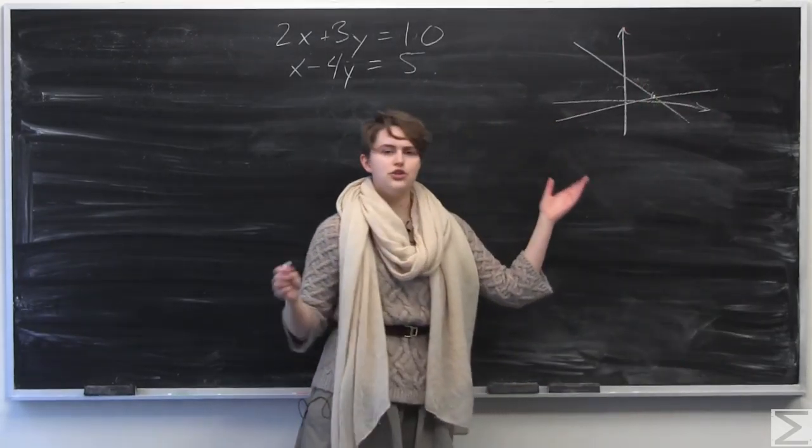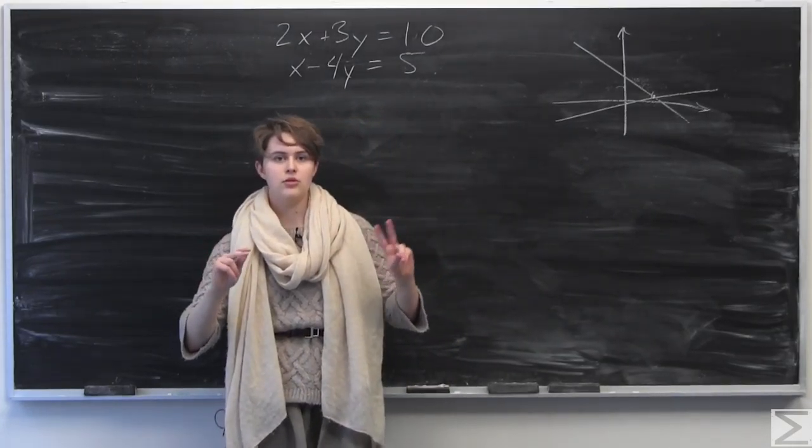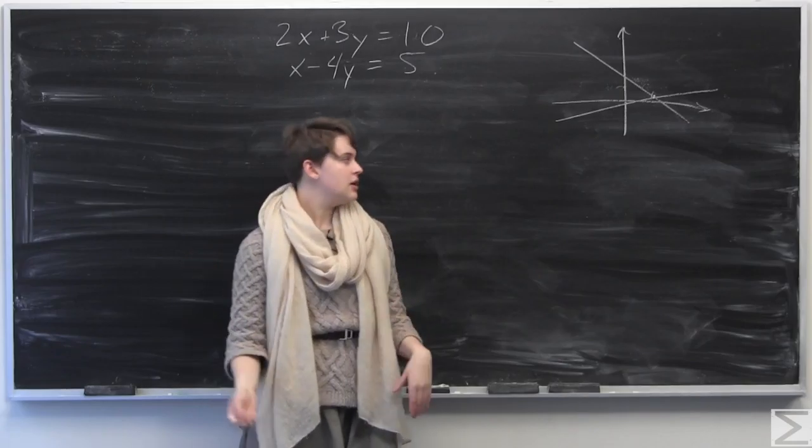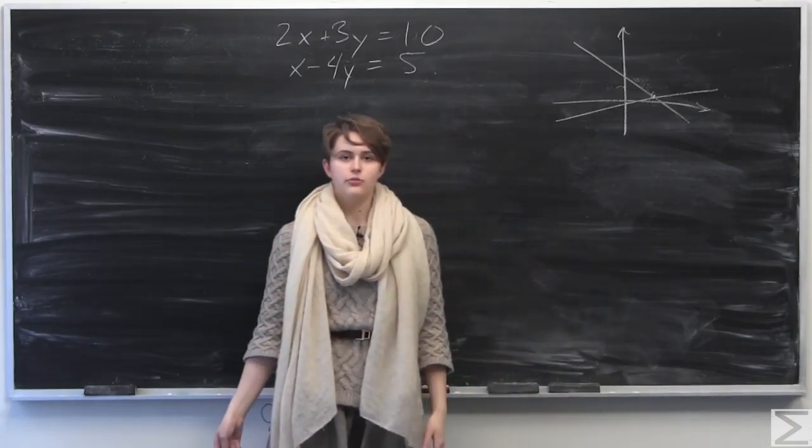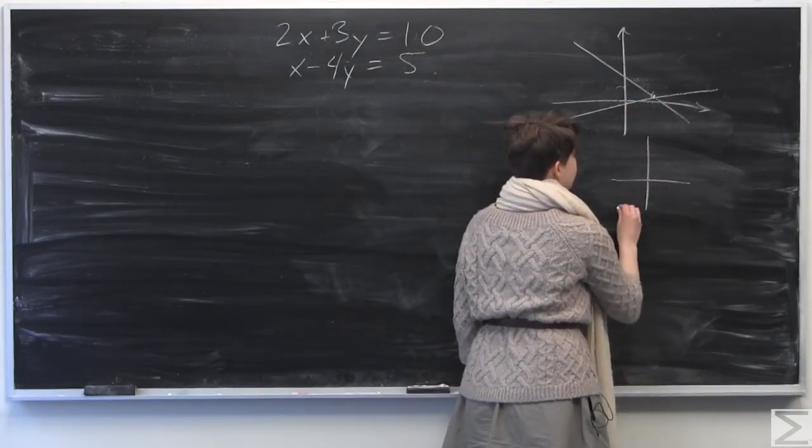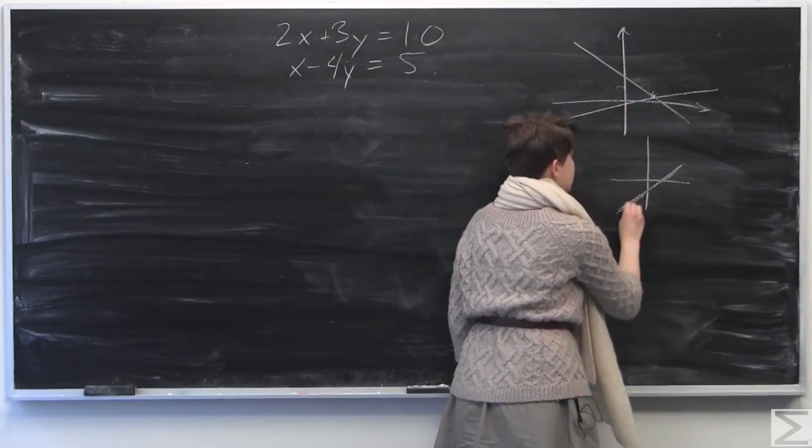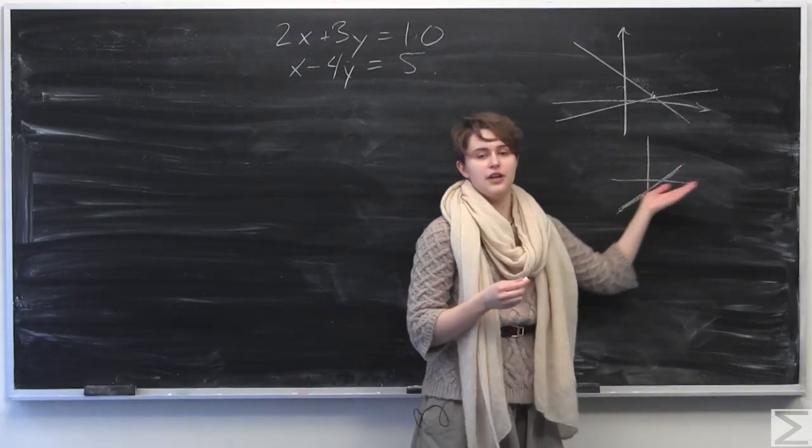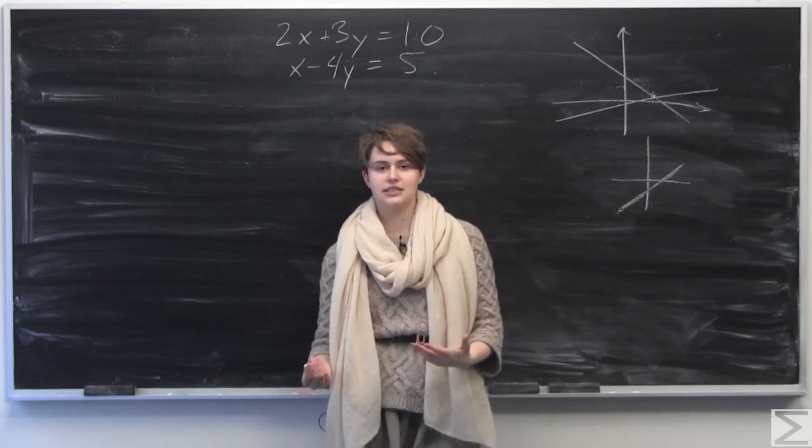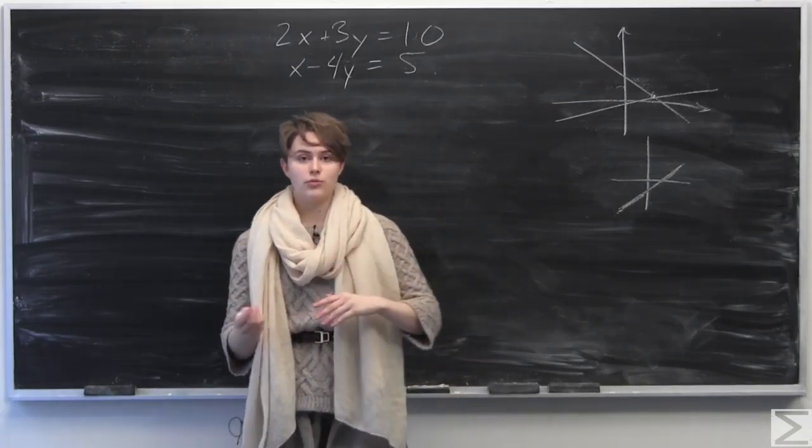OK, so there are two possible categories of things that could happen when we solve our system of equations. One is that we have a consistent system, which either means that we have one point of intersection here, or we have essentially both lines being the same line. So they intersect an infinite number of times, in which case the system is also consistent. Because in order to have a consistent system, we need to have one or more solutions.